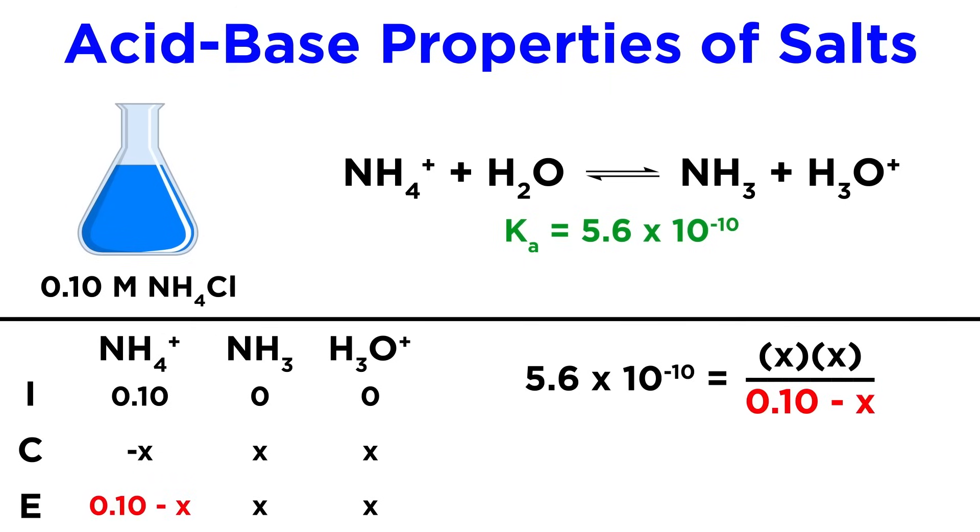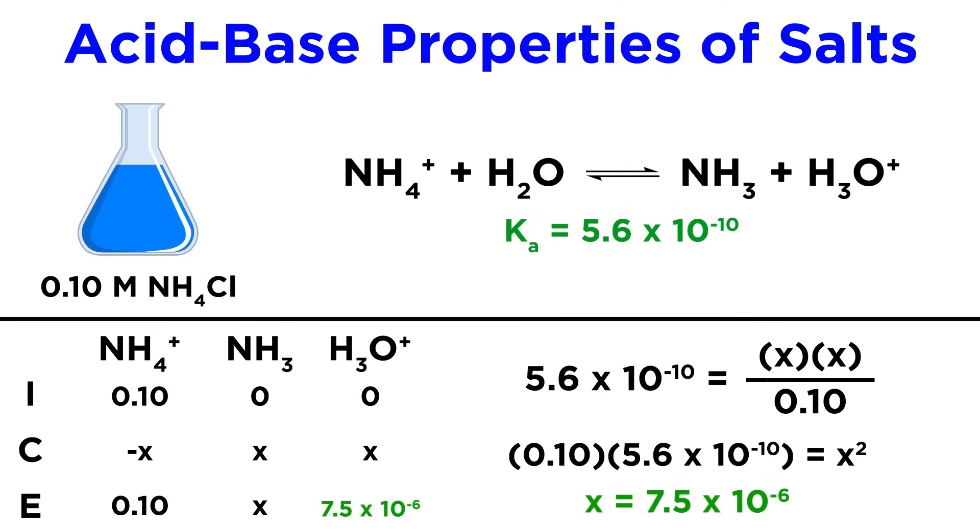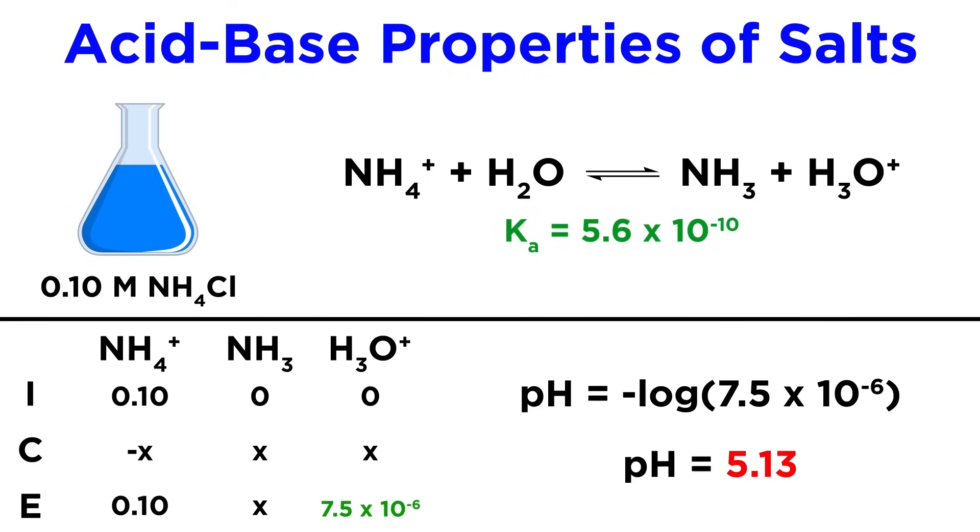We can simplify by making this simply 0.1, multiply both sides by 0.1, and take the square root. We get 7.5 times 10 to the negative 6 as the hydronium ion concentration. So to get the pH, we take the negative log, and that will give us 5.13.